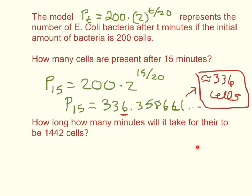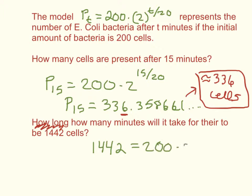In this next example, how many minutes will it take for there to be 1,442 cells? In this particular example, we are given the amount at the end — there are 1,442 cells — and this is going to equal our equation. We're looking for our value of T.